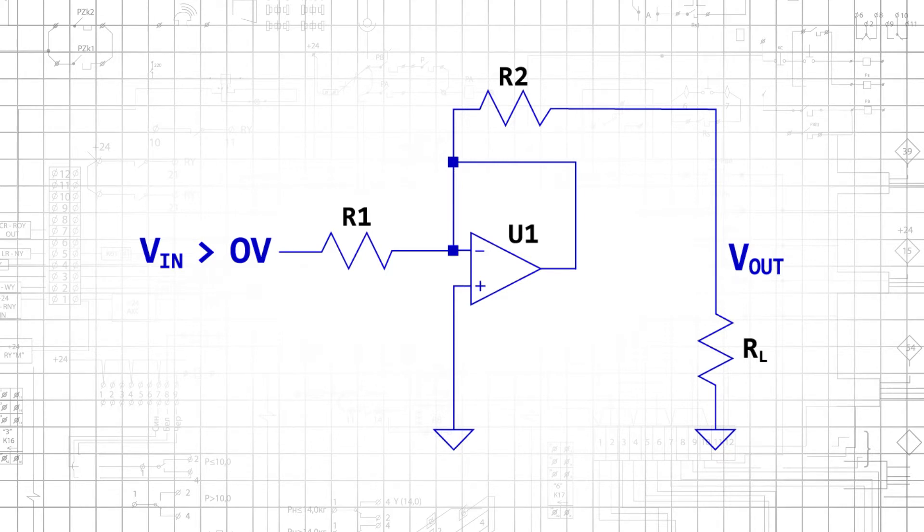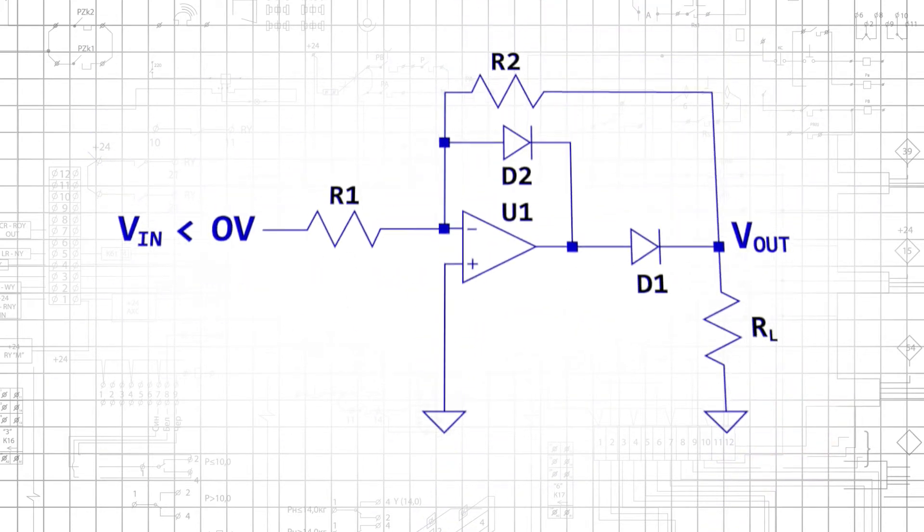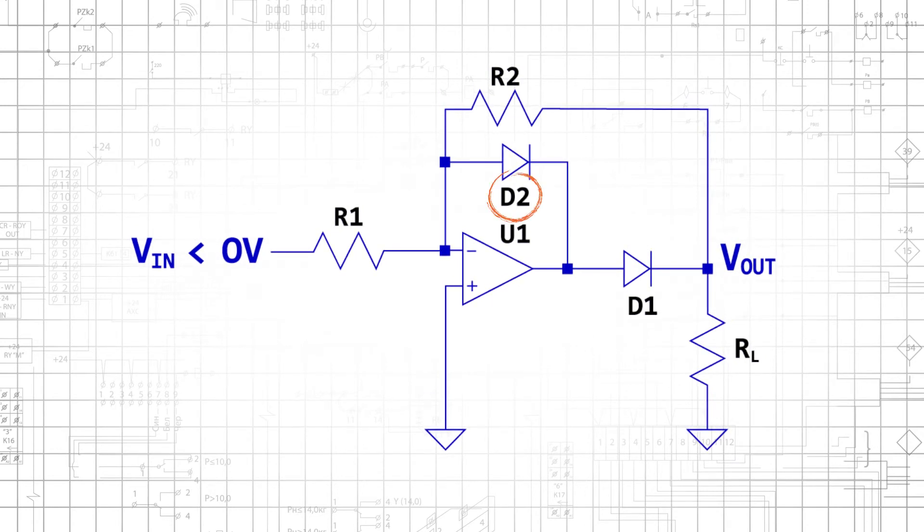Thus, for positive input voltages, the output node is grounded through R2 and RL. For negative input voltages, D2 is an open circuit and D1 conducts. Under these circumstances, the circuit functions as an inverting amplifier, with Vout equal to Vin multiplied by negative R2 over R1. So this improved active rectifier is actually an inverting rectifier.